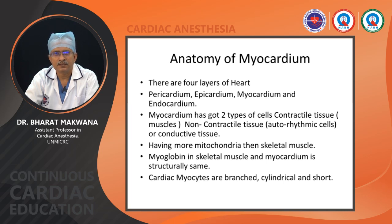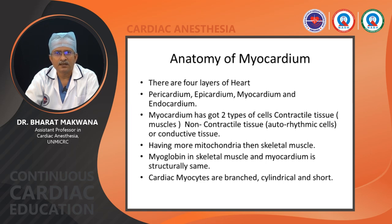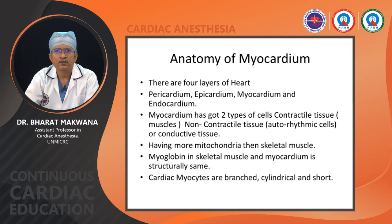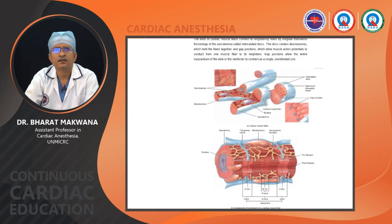The myocardium has more mitochondria than skeletal muscle due to its higher oxygen consumption rate. Myoglobin in skeletal muscle and myocardium is structurally the same, but myoglobin concentration is relatively higher in the myocardium due to a high oxygen reserve. Cardiac myocytes are branched, cylindrical, and short in nature.